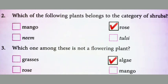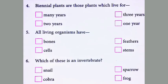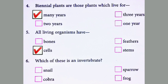Question number 3: Which one among these is not a flowering plant? The answer will be algae. Question number 4: Biennial plants are those plants which live for — the answer is many years. Question number 5: All living organisms have — the answer is cells. Question number 6: Which of these is an invertebrate? The answer will be snail.